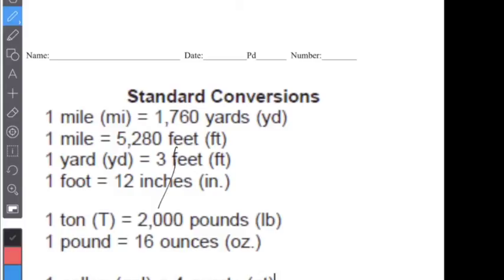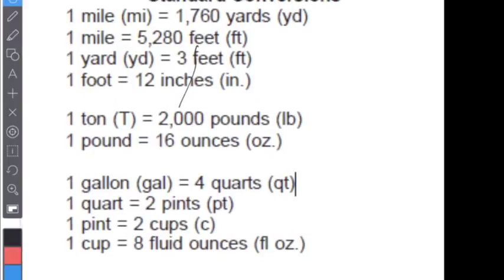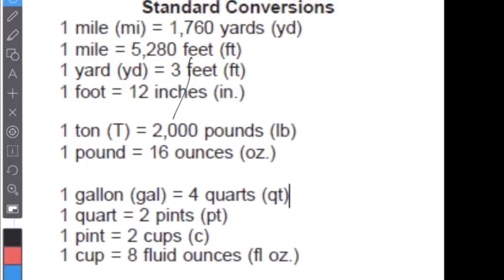This is going to be our review for our quiz on converting units. Let's first talk about customary units. In customary units we're talking about length, which is miles, yards, feet, and inches. We're talking about weight, which is tons, pounds, and ounces. And we're talking about liquid measurement or capacity, which is gallons, quarts, pints, cups, and finally fluid ounces.